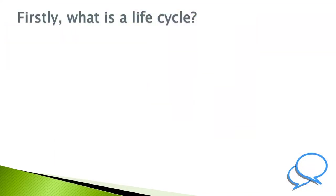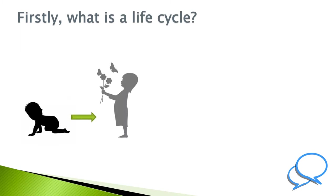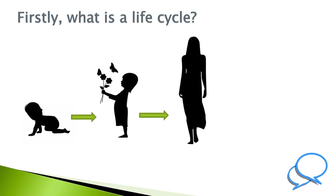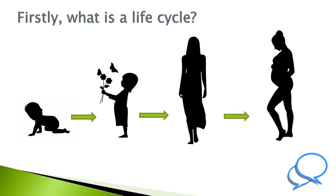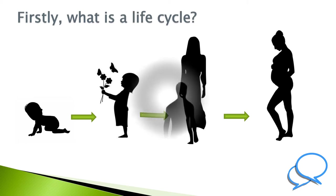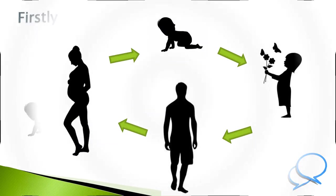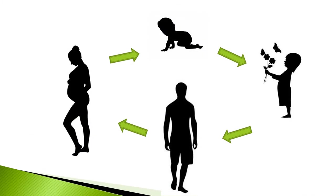Firstly, what is a life cycle? All animals, including humans, are born. They grow and often have children of their own. This is known as a life cycle.